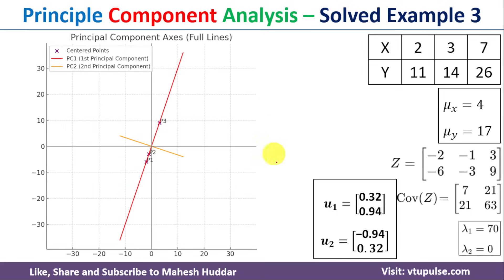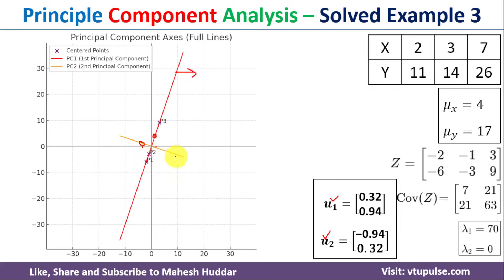Next we plot the principal component axes. For u₁ (first normalized eigenvector), x = 0.32 and y = 0.94 — we draw a line through the origin, shown as the red line, which is the first principal component. For u₂, x = −0.94 and y = 0.32 — the line through the origin is shown in orange as the second principal component.